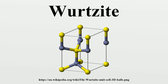The iron content is variable, up to 8%. It is trimorphous with matraite and sphalerite. It occurs in hydrothermal deposits associated with sphalerite, pyrite, chalcopyrite, pyrrhotite, and marcasite. It also occurs in low-temperature clay and stone concretions.